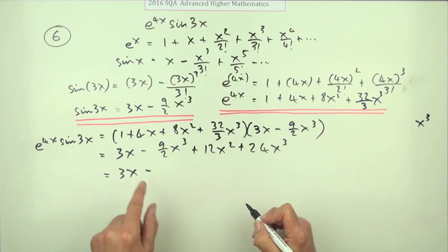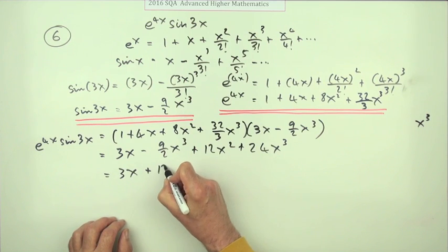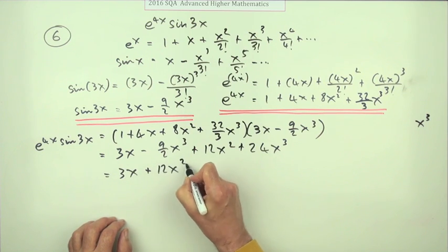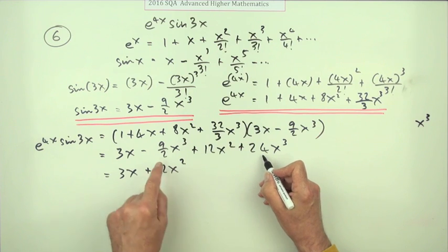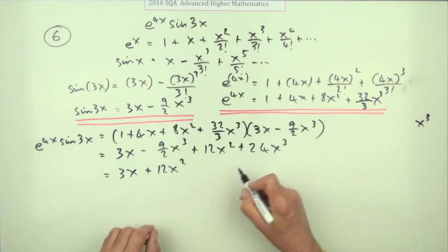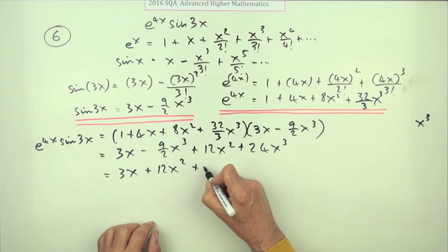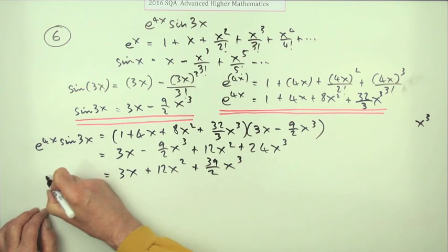Tidying it all up: 3x plus 12x squared, then combining the x cubed terms: 24 minus 9/2 gives 39/2, so the final answer is 3x plus 12x squared plus 39/2 x cubed.